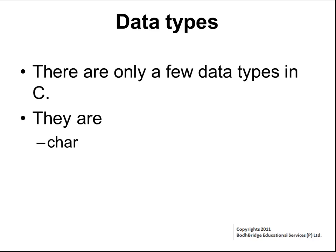They are: char, which is the data type for storing characters; int, which is the data type for storing integers; and float, which is the data type to store floating point numbers — numbers which have digits after the decimal point.